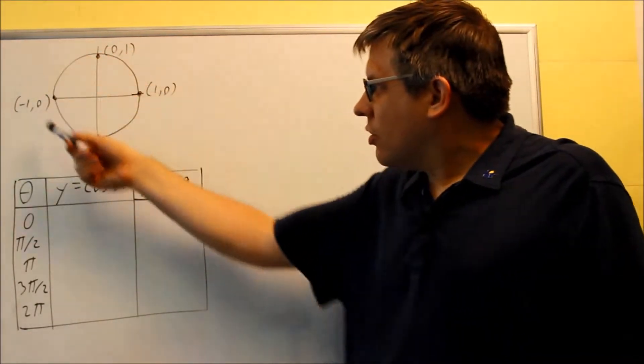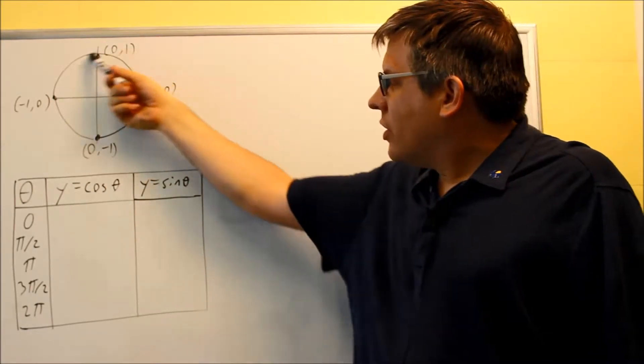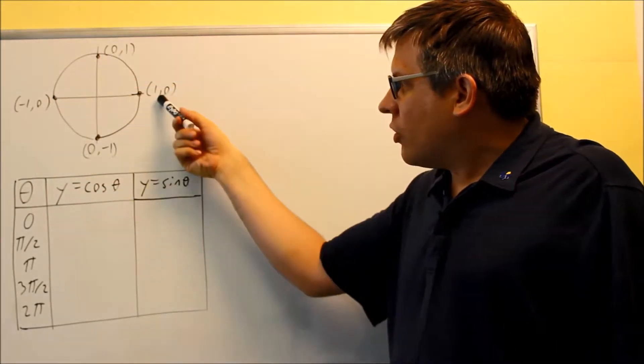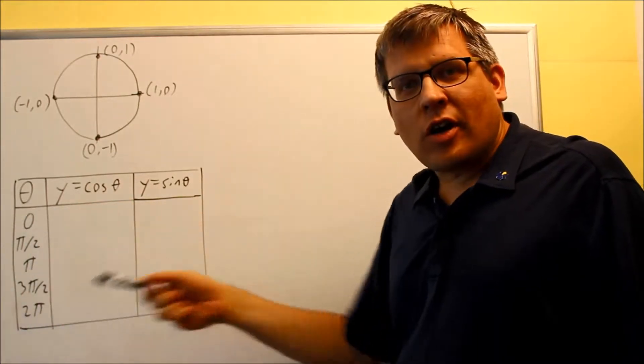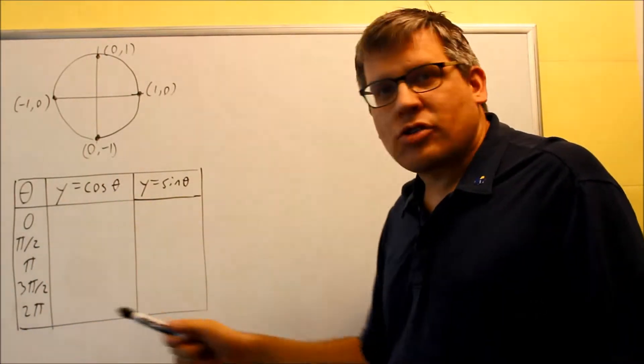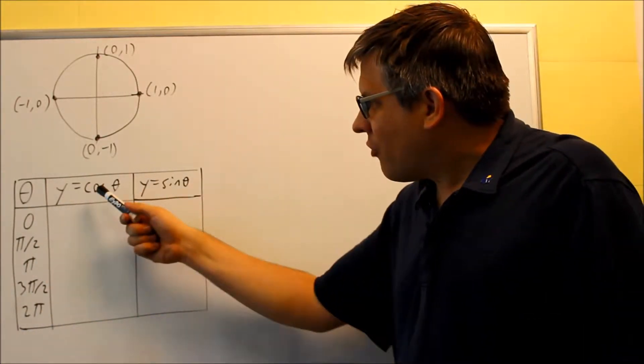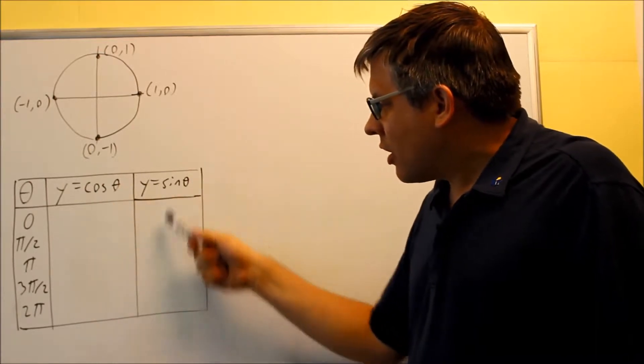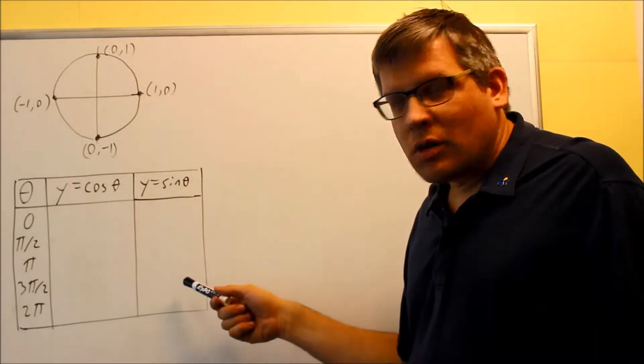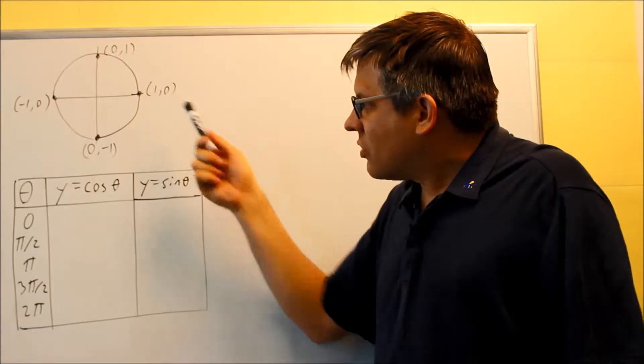So here is a unit circle and I only have these four points labeled. These correspond with these values that I made in this table. So theta is your angle and I'm going to eventually find cosine and sine and these are going to be the y values I'll have here. I'm going to grab those off this unit circle.